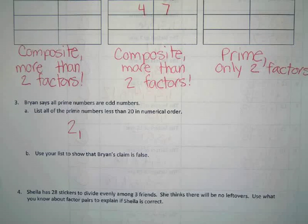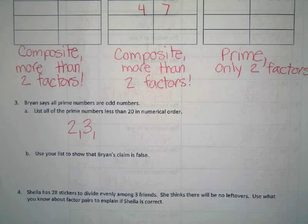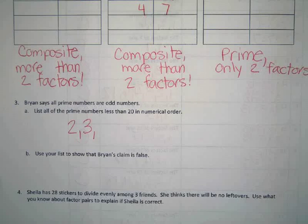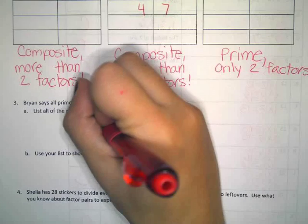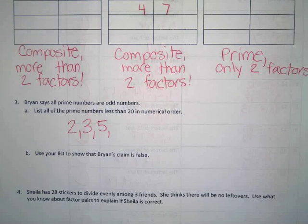What about 3? 3 is prime as well because you can only multiply it by 1 and 3. What about 4? Is 4 prime? No, because it has 1, 2, and 4 as factors — that's more than two factors. Is 5 prime? 1 times 5 — what else can we do? 1 times 5 is 5, so yes, 5 is prime.